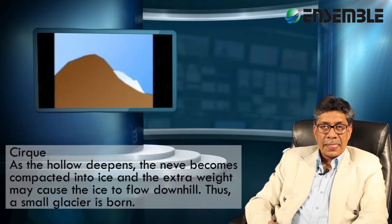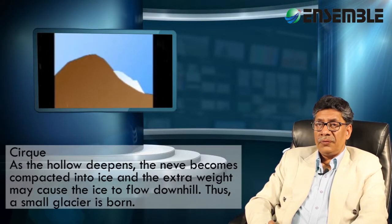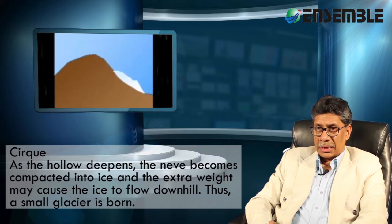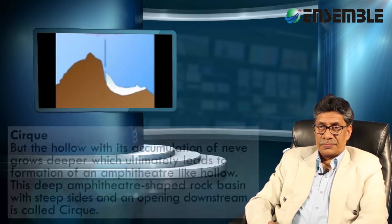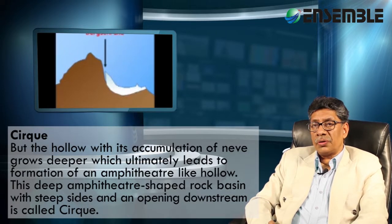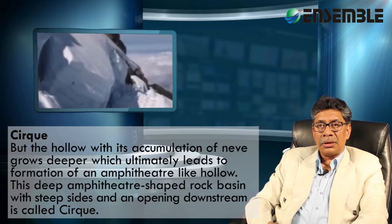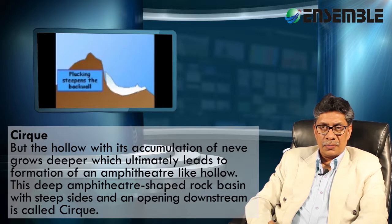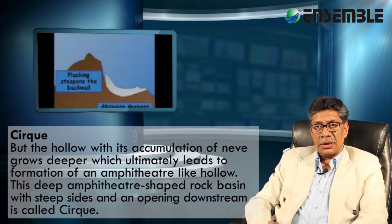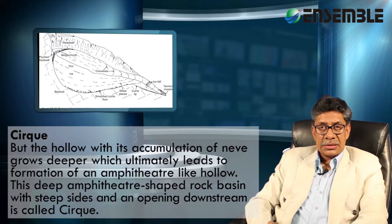The second erosional landform is a cirque. As the hollow deepens, the névé becomes compacted into ice and the extra weight may cause the ice to flow downhill, and a small glacier is born — called a glacieret. The hollow grows deeper with its accumulation of névé and ultimately leads to the formation of an amphitheatre-like hollow. This deep, amphitheatre-shaped rock basin with steep sides and an opening downstream is called a cirque.